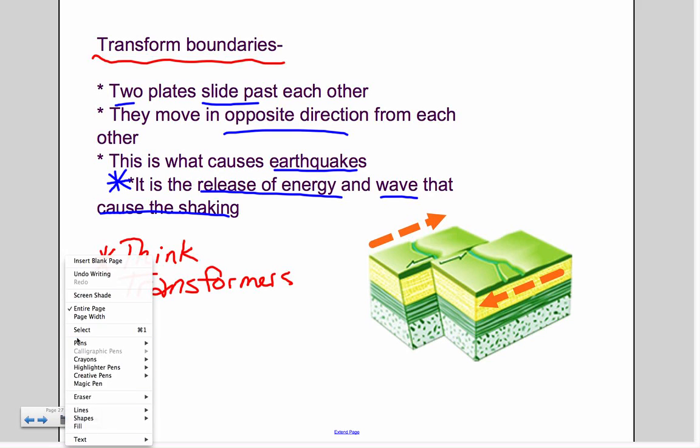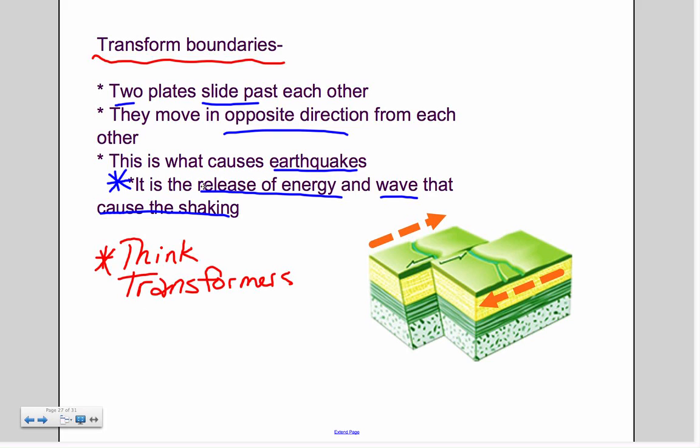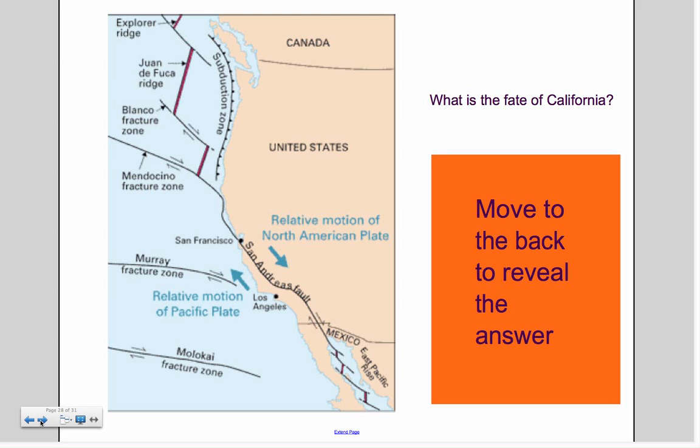A transform boundary is where they slide past each other. I said earlier to think about transformers. If you've ever seen the movies, they don't pull their arm off and reattach it somewhere else. It just kind of all slides against itself. A transform boundary is when two plates move in opposite directions from each other. This causes earthquakes, and it's actually the release of energy and waves that cause that shaking. It's not the movement itself. It's the energy released from the slide past.